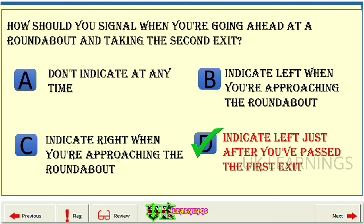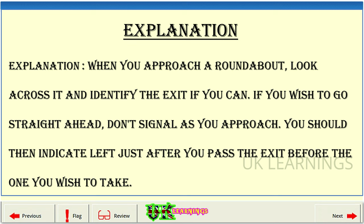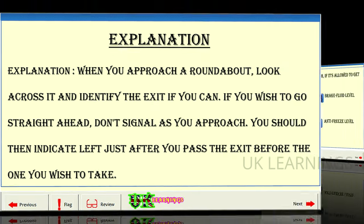Indicate left just after you've passed the first exit. Explanation. When you approach a roundabout, look across it and identify the exit if you can. If you wish to go straight ahead, don't signal as you approach. You should then indicate left just after you pass the exit before the one you wish to take.